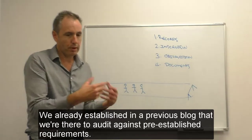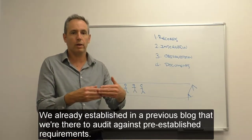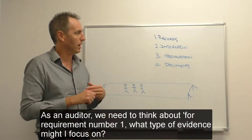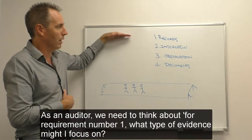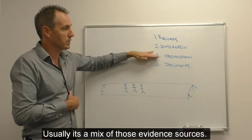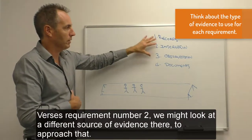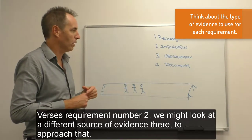We already established in previous blogs that we're there to audit against pre-established requirements. As an auditor we need to think about, okay, for requirement number one, what type of evidence might I focus on? Usually it's a mix of those evidence sources. Versus requirement number two, we might look at a different source of evidence to approach that.